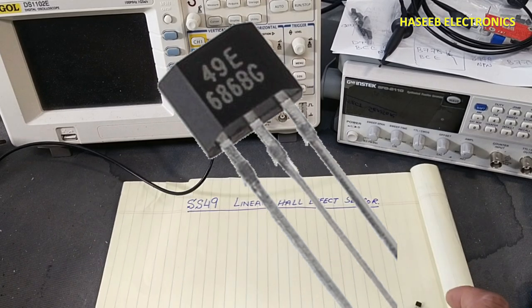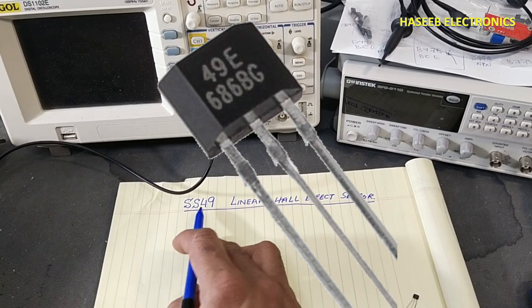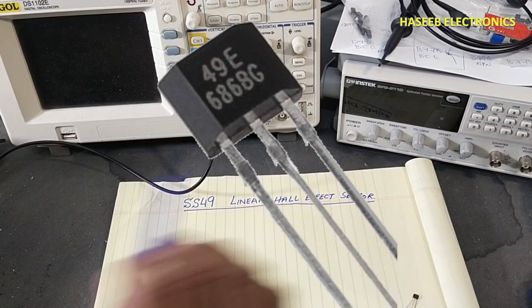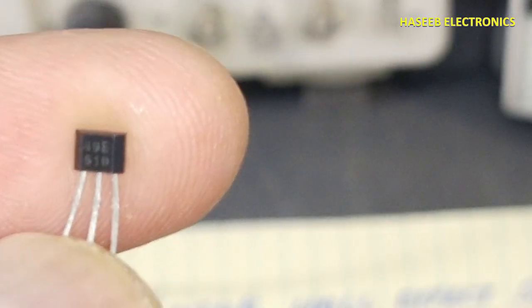Assalamu alaikum warahmatullahi wabarakatuh, friends welcome back to my channel. Today we are discussing the SS49 linear Hall effect sensor. It is used to detect linear electromagnetic field or magnetic field.